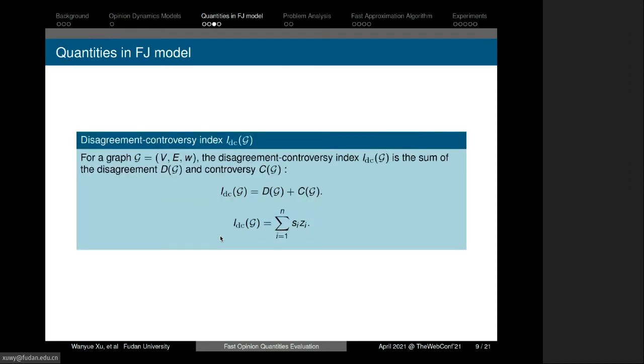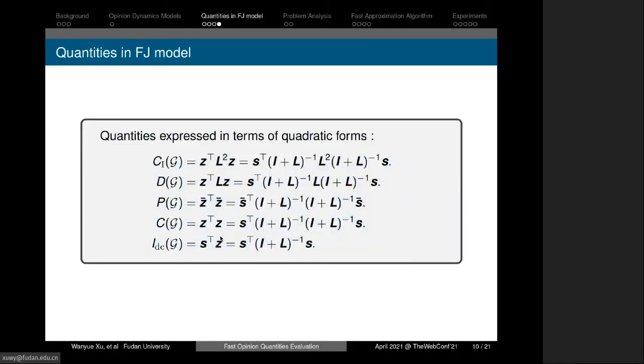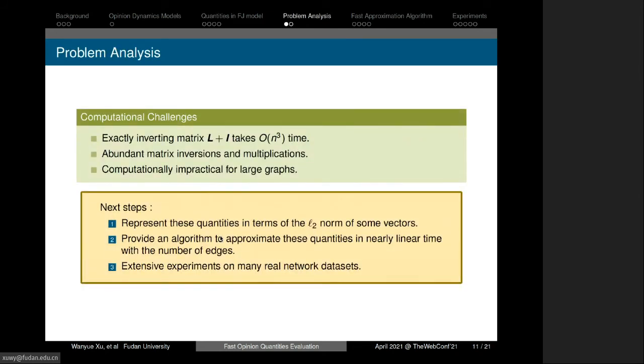Let the sum of disagreement and controversy be the disagreement-controversy index. It is easy to verify this index equals the inner product between internal opinion vector and expressed opinion vector. We express the quantities in terms of quadratic forms. Because the equilibrium expressed opinion can be calculated by forest matrix, we establish a connection between forest matrix and these key quantities.